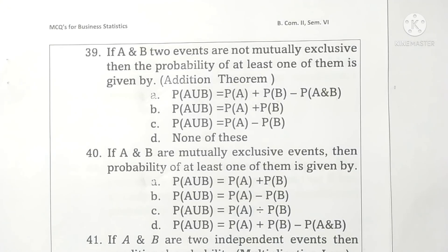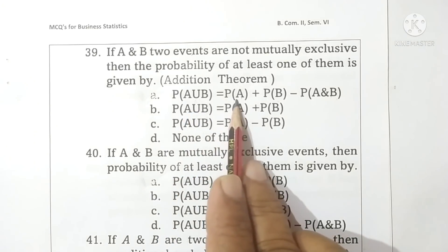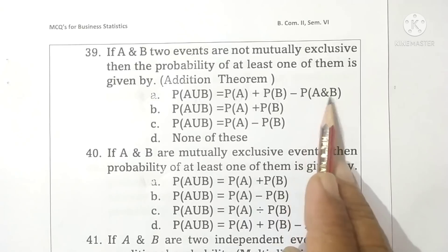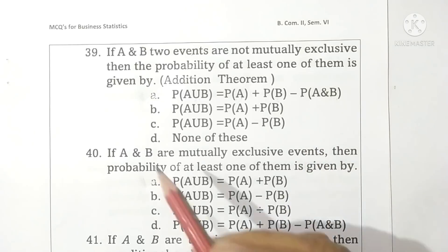We are going to discuss the multi-choice questions on business statistics, second part. Question 39: If A and B are two events not mutually exclusive, then the probability of at least one of them is given by probability of A union B equals probability A plus probability B minus probability of A and B. Option A is correct.